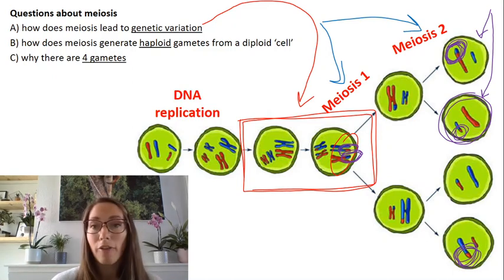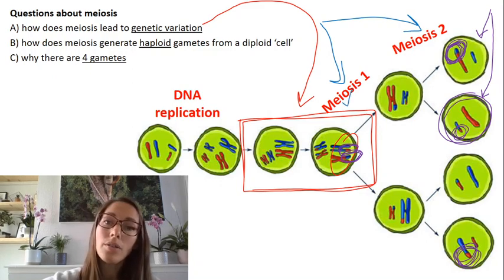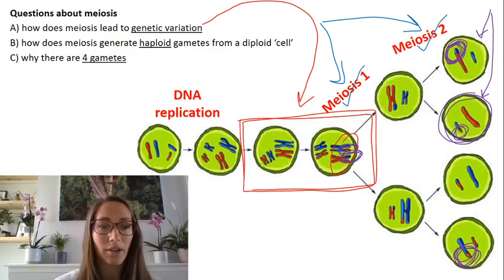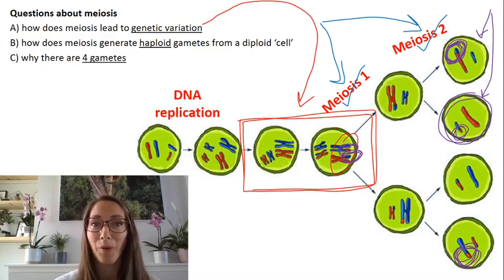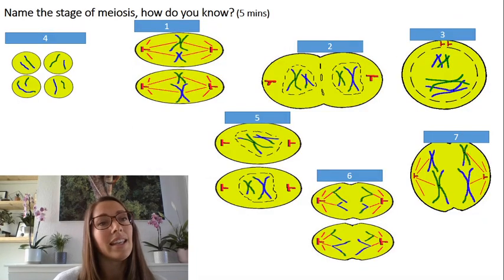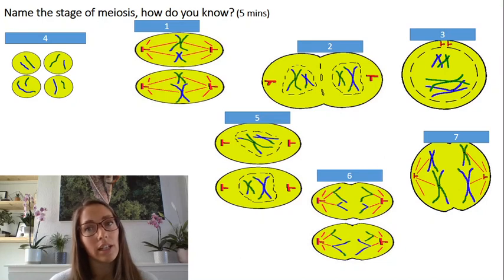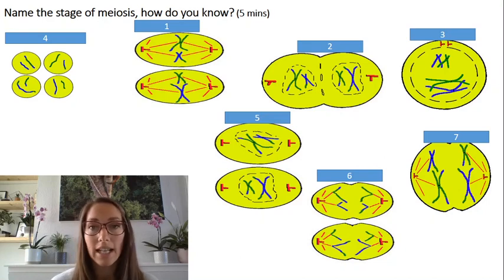There are four gametes because there are two cell division stages, and each cell division stage produces two cells from one. So you might just want to test yourself on your meiosis knowledge — pause the video and see if you can identify the stages of meiosis.